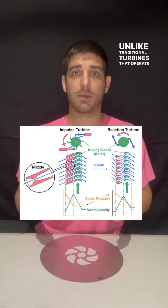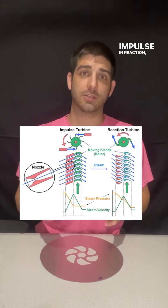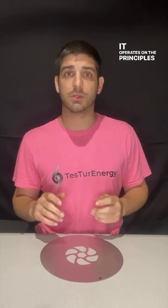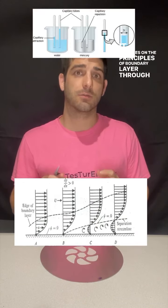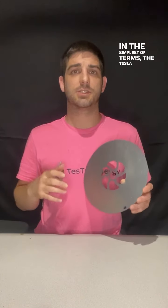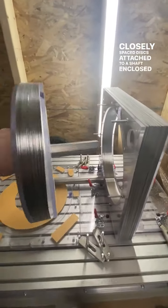Unlike traditional turbines that operate using principles of impulse and reaction, the Tesla turbine is a bit unique. It operates on the principles of boundary layer through fluid adhesion and viscosity. In the simplest of terms, the Tesla turbine consists of closely spaced discs attached to a shaft, enclosed within a casing.